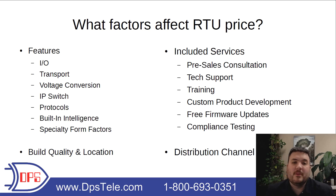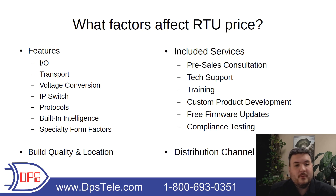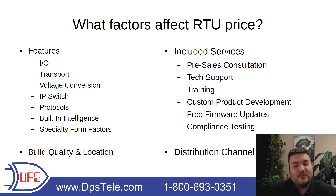Features are probably the number one thing that affects price, no matter what you're researching, and RTUs aren't any different. If it generates a lot of value for you, it could be worth the price. So feature-wise, the first thing to consider is inputs and outputs — IO. On an RTU, there are three major types: discrete inputs, analog inputs, and control relay outputs.